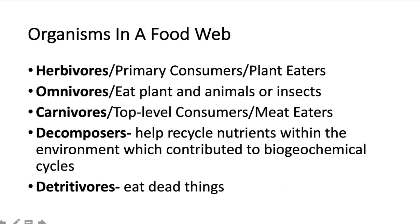Here's a quick review of a few organisms you'll see in a food web. Herbivores — 'herbs' are plants, so herbivores are plant eaters, usually your primary consumers. Omnivores — 'omni' means everything — so they eat both plants and animals or insects. Remember, insects technically qualify as meat. Carnivores — 'carne' in Spanish means meat — so carnivores are your meat eaters or top-level consumers, usually either secondary, tertiary, or quaternary level consumers, higher up in your food chain or food web.